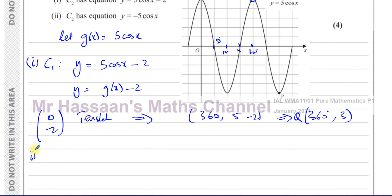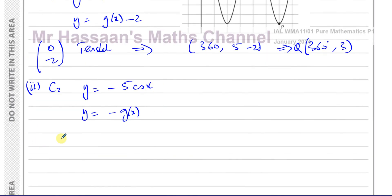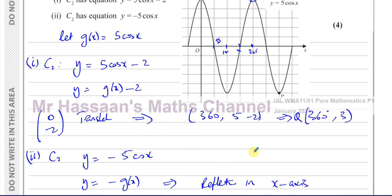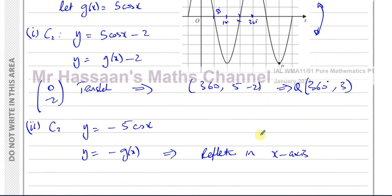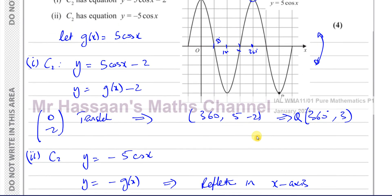For Part B sub-question 2, C2 has equation y equals minus 5 cosine x — that's y equals minus g(x). This represents a reflection in the x-axis, because the minus sign is in front of the whole function. A reflection in the y-axis would be cosine(−x), but here it's −5 cos x, so it reflects vertically — in the x-axis. The y-coordinates change sign and the x-coordinates stay as they are.